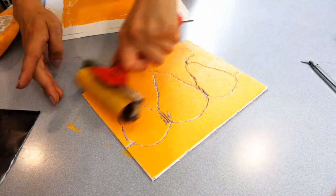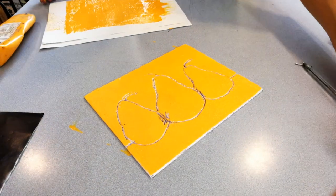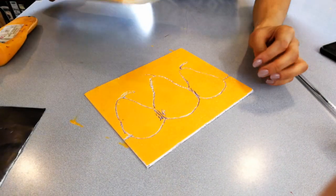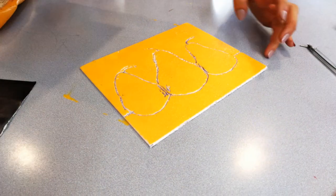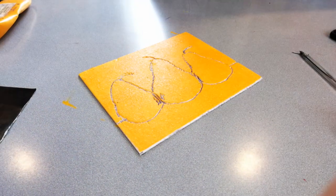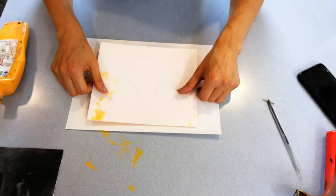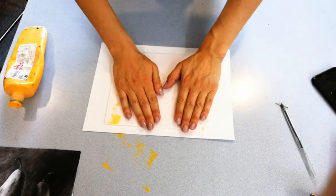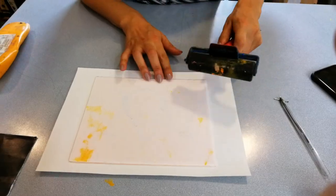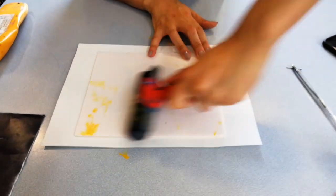The first prints never give you the best because basically the polyboard needs to absorb a bit of the ink. So what I'm going to do is a practice one. I'm just going to put this down like that. I've got a clean roller, you place it on top.